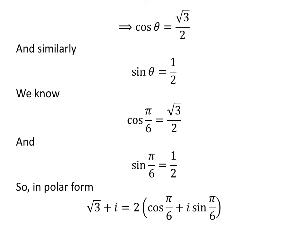Therefore, the polar form of √3 + i is 2(cos(π/6) + i sin(π/6)).